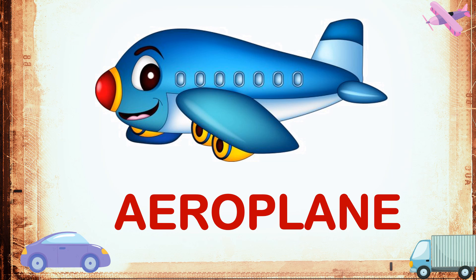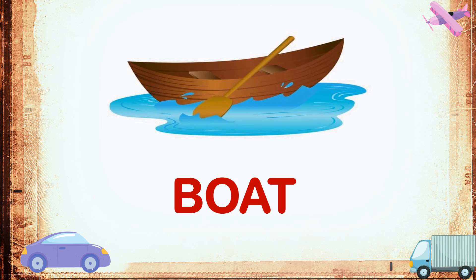Some means of transport fly in the air. This is an aeroplane. Aeroplane is air transport and it is the fastest means of transport. This is a boat — it is water transport.